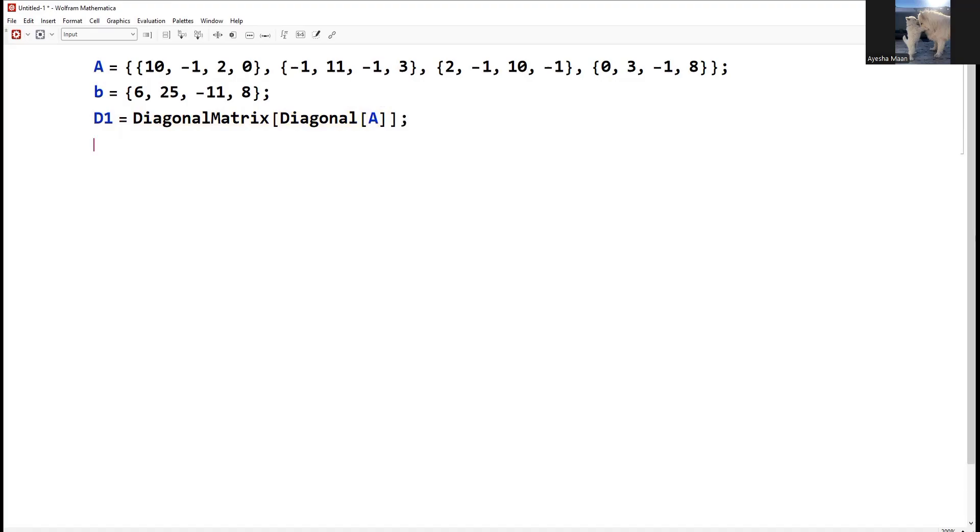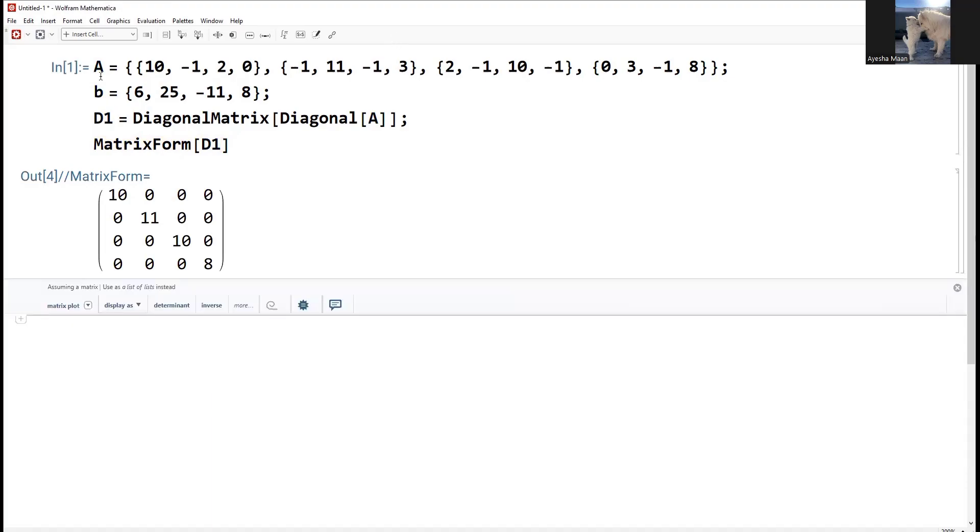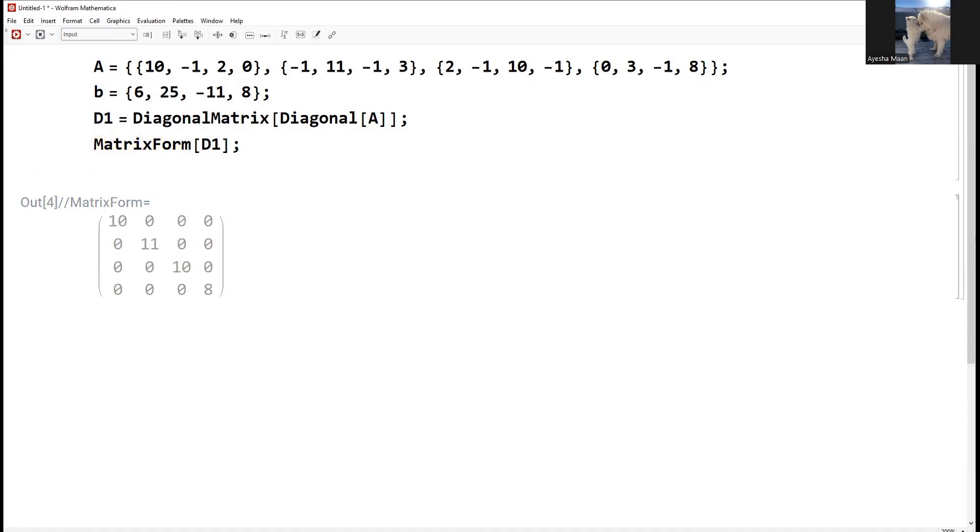I will show you D1 matrix form. We discussed these things in the last lecture, but I am going to explain it again. D1 is your A matrix diagonal entries. This is diagonal A. When we write it as a diagonal matrix, it will become this form. I don't need this output so I am just telling you that it will come this way.